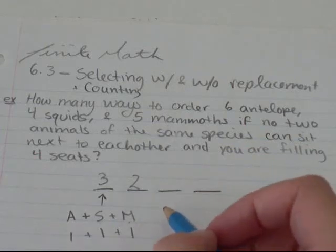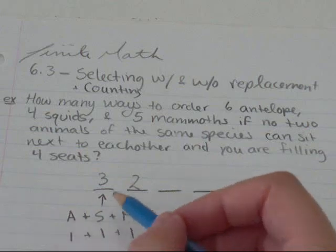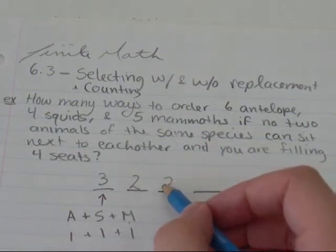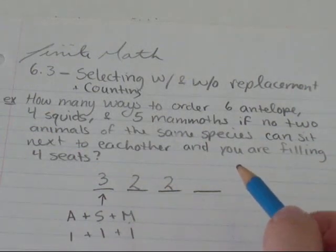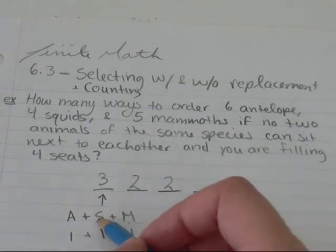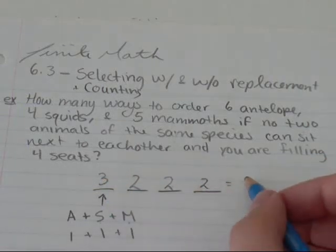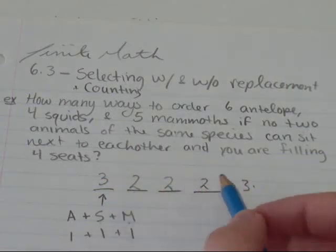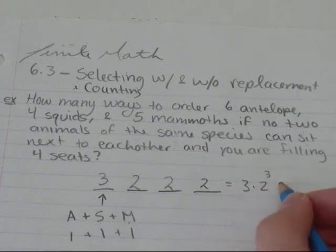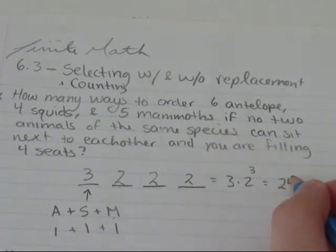Let's say I chose a squid. So in this spot, I can have an antelope or a mammoth. So I have two choices. Let's say I chose an antelope. So in the third slot, I can either have a squid or a mammoth. So I've got three times two times two times two, is just two to the power of three. And you'll find that that gives you 24.